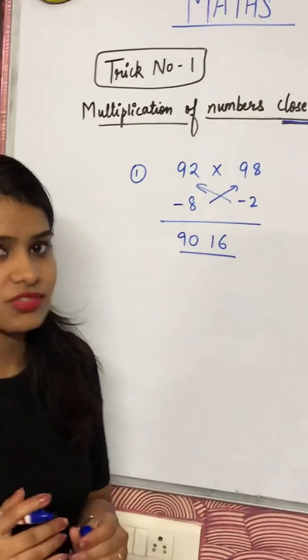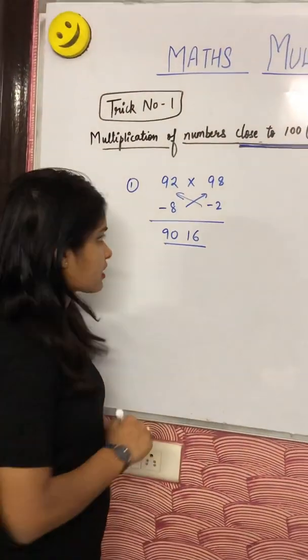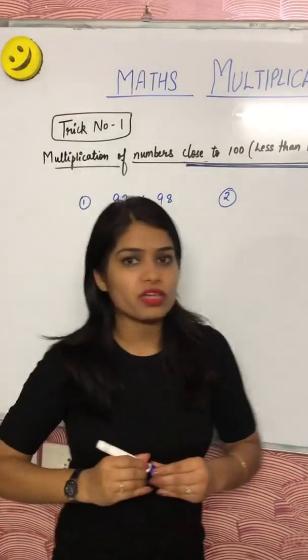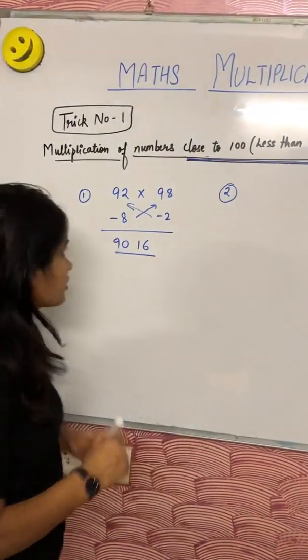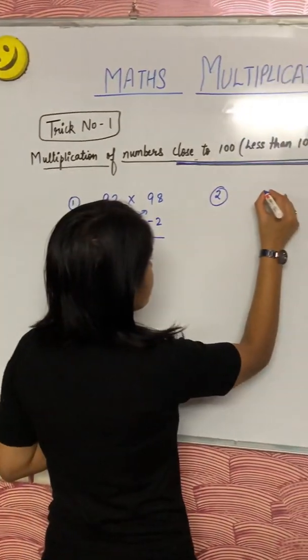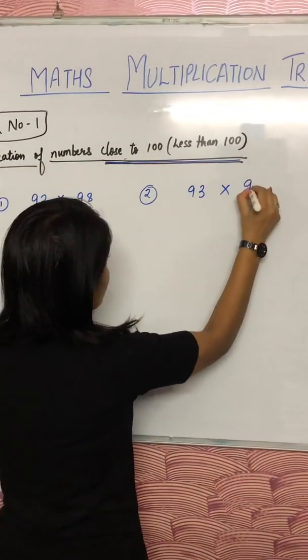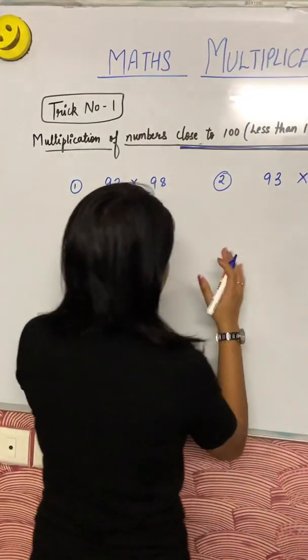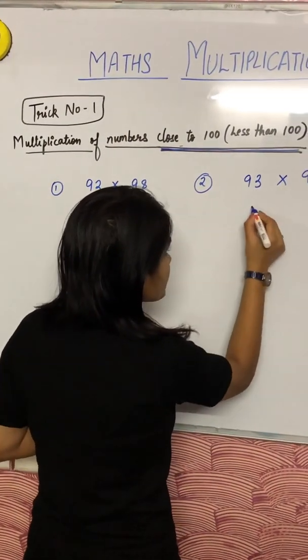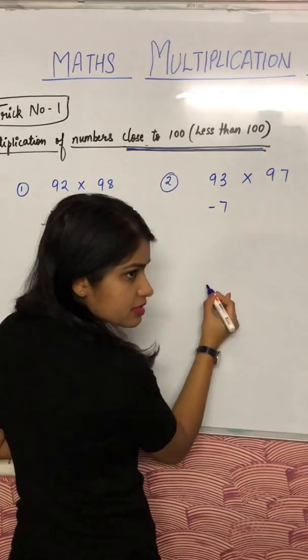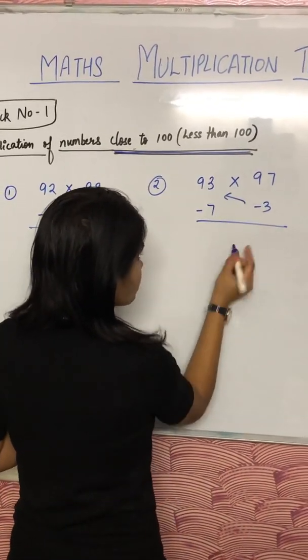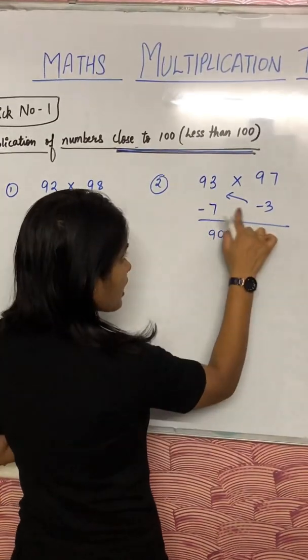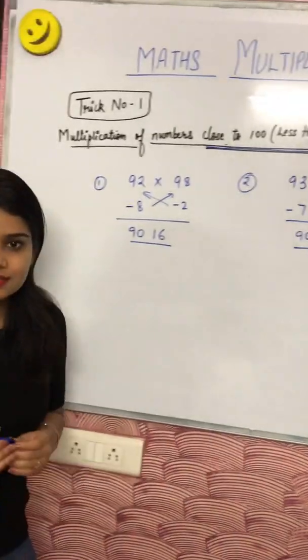And guys, you can check your answer with calculator also, right? After doing this trick, tumko calculator ki zaroorat nahi padne wali, I am very sure. See, I am taking another example: 93 and 97. This time I will do it better and faster. So what do you have to do? 93, minus 3 is 90, correct. And 7 threes are 21. Yes guys, this is the answer.